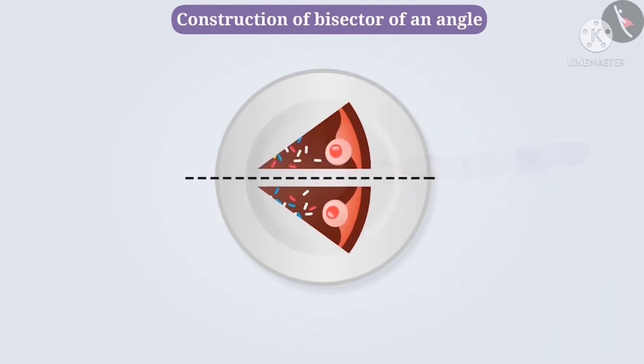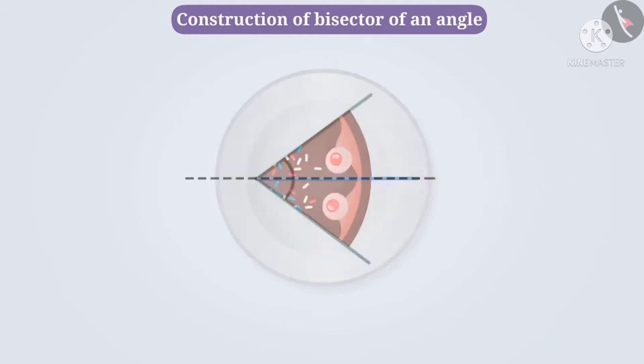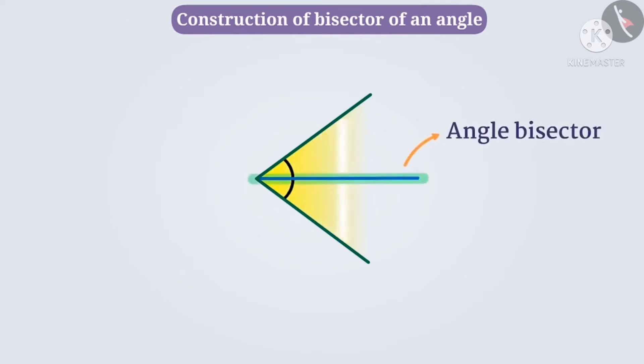...we make two equal parts. We imagine this is an angle, and these two parts may be equal from the middle line. This is an angle bisector - this line makes the given angle into two equal parts.